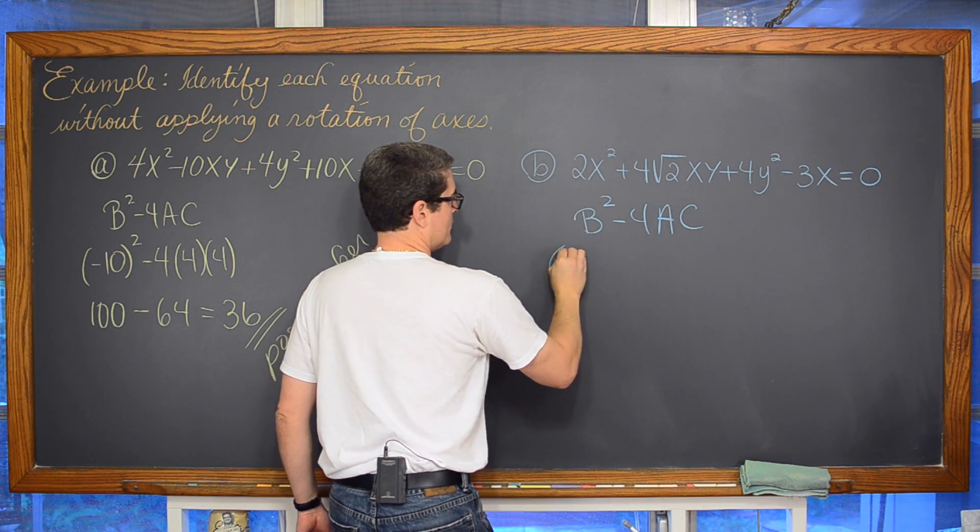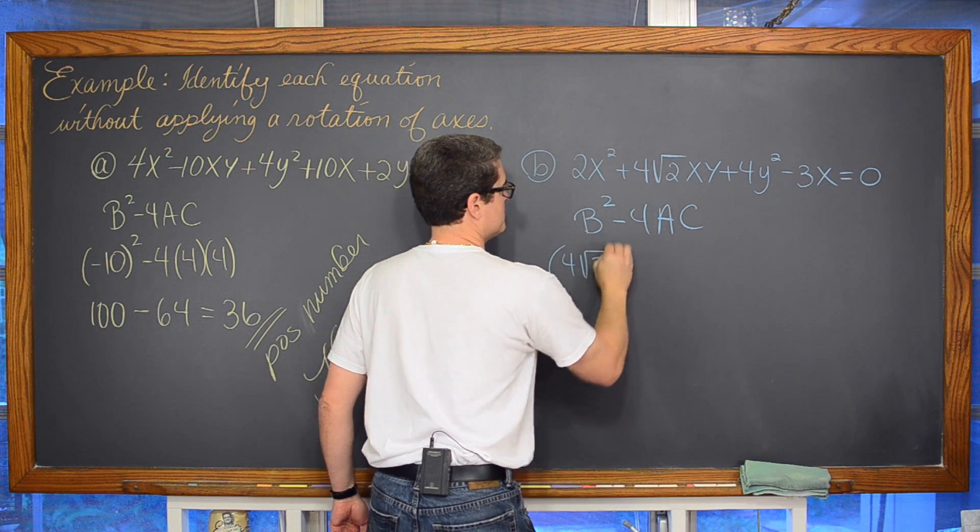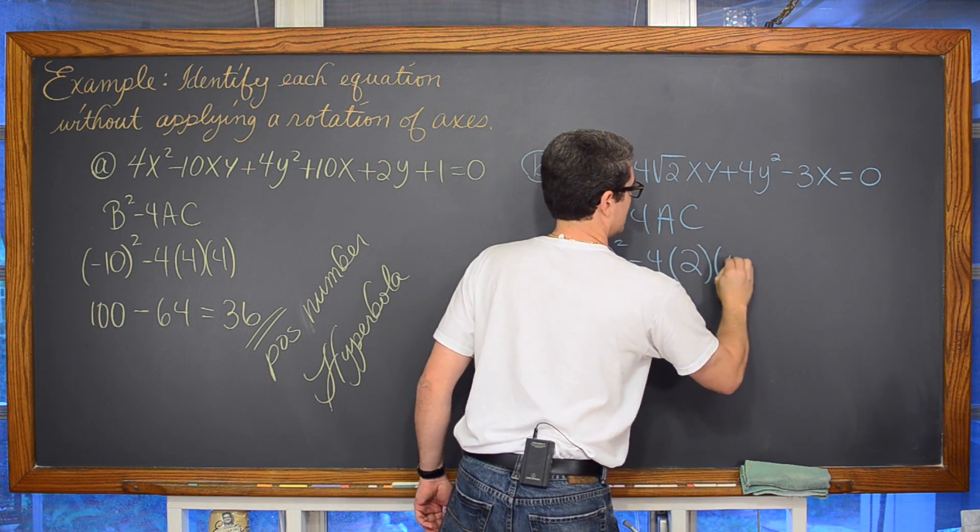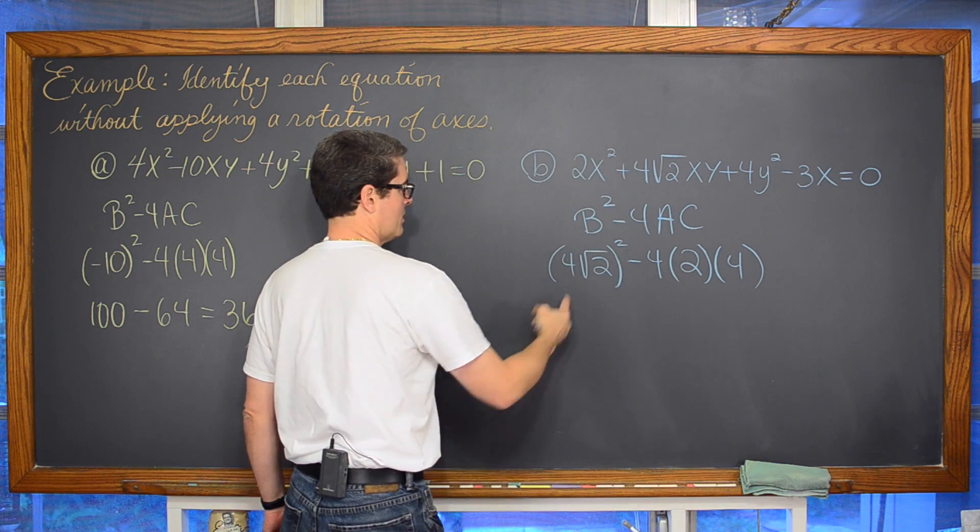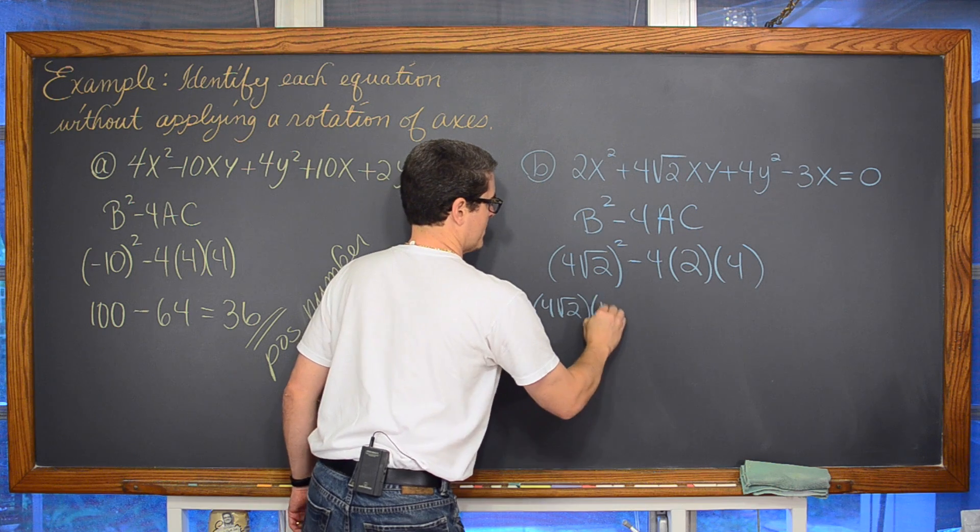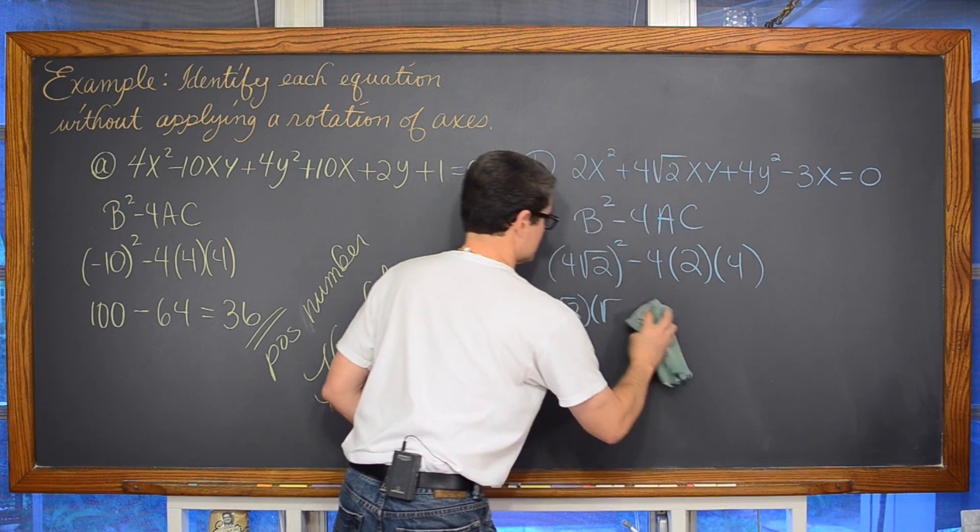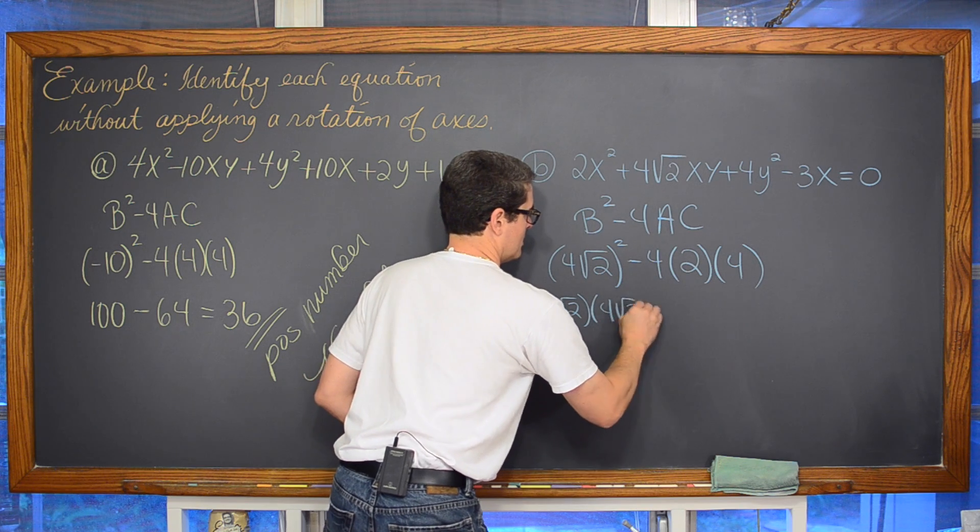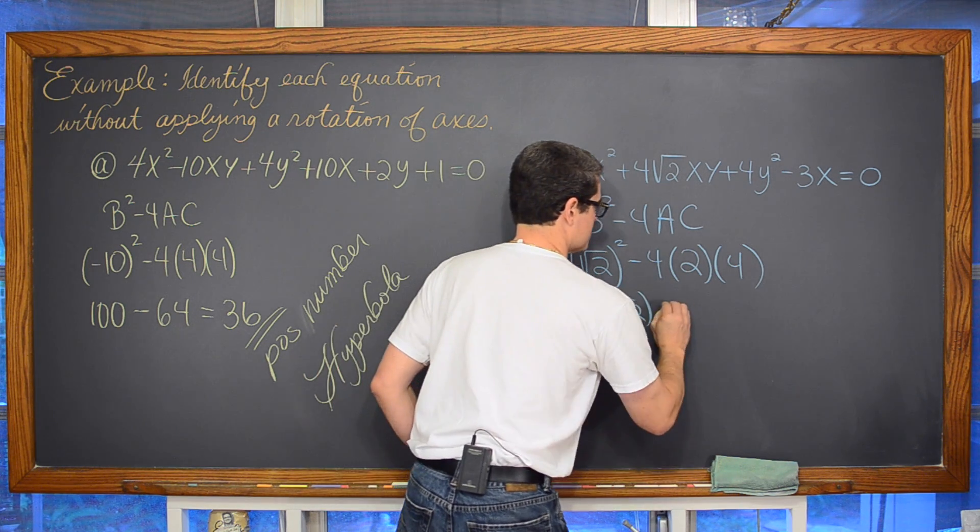Well we've got 4 square root of 2 squared minus 4 times a, which is 2, times c, which is 4. Here we've got 4 square root of 2. Hopefully nobody in pre-calculus really needs me to show this, but I like to make sure that it all makes sense.